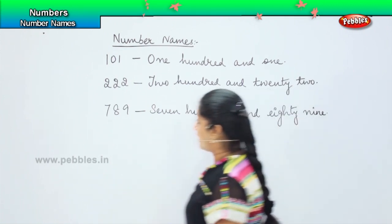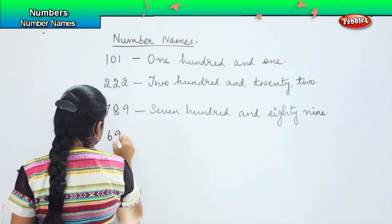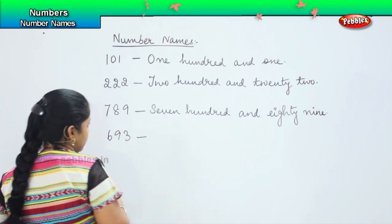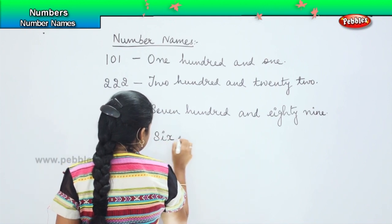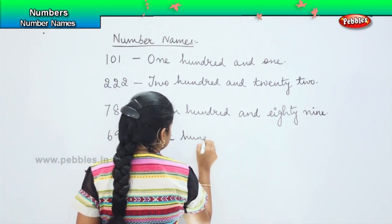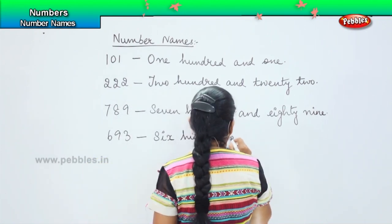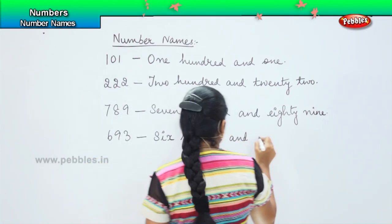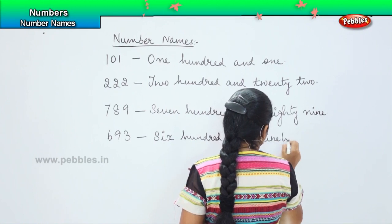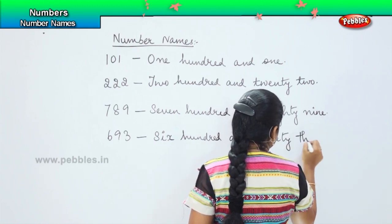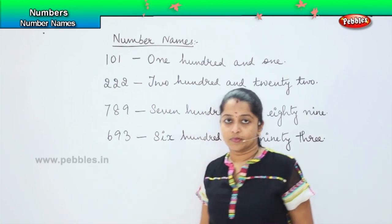The next one is six, nine, three. How will you write it? Six hundred and ninety three.